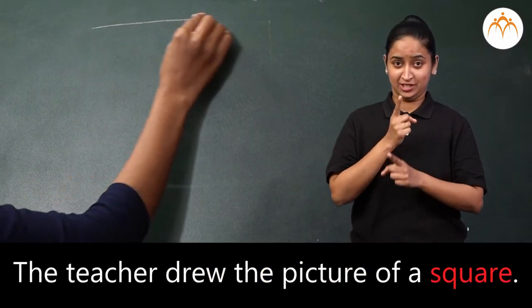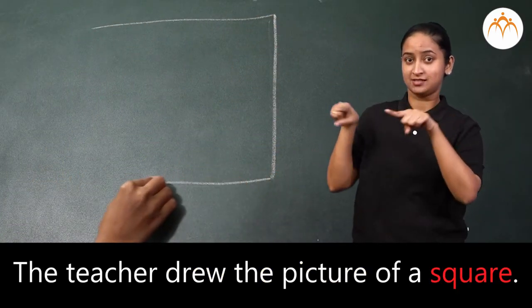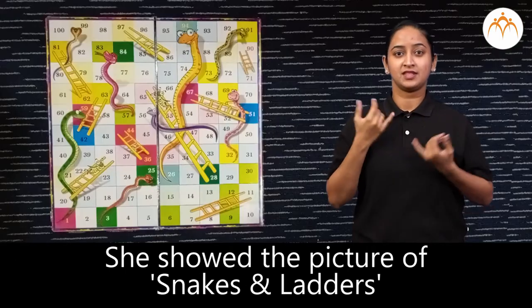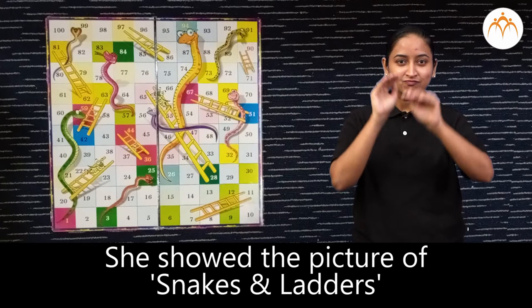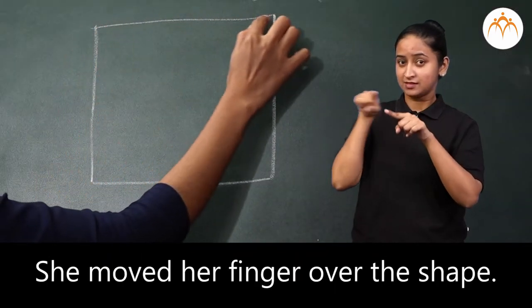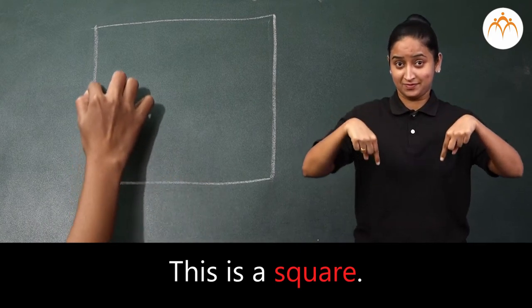The teacher drew the picture of a square. She showed the picture of snakes and ladders. She moved her finger over the shape. This is a square.